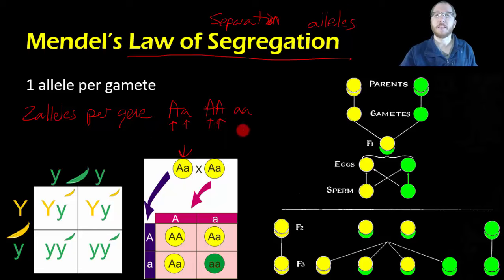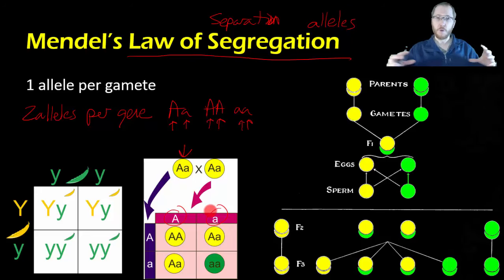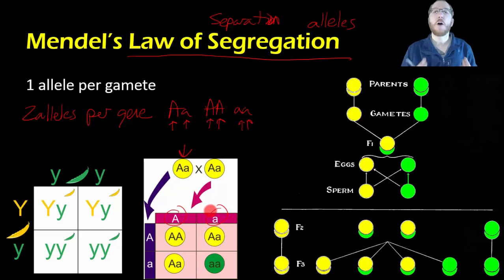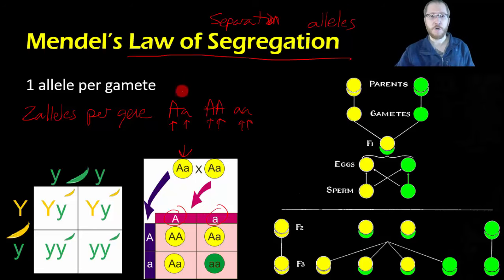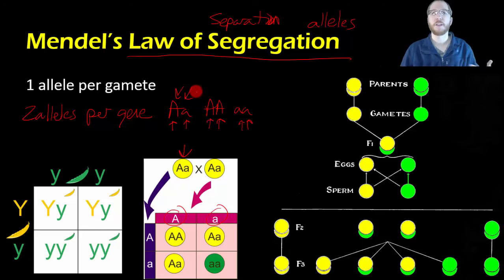What Mendel realized is that when you have an offspring, you only pass on one of yours. So if you have a big A and a little a, you can only pass on either the big A or the little a. This goes back to meiosis — when you do meiosis, the sperm and the ovum only have one set of chromosomes, not two. So you only get one copy, one allele, for each gene. The other allele comes from the other parent — one from the sperm, one from the ovum — getting you back to being 2n, normal diploid.